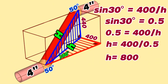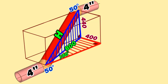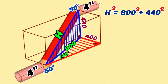800 millimeters is the hypotenuse of the horizontal red color right-angle triangle and is also one of the perpendicular sides of the vertical blue right-angle triangle. Now let's find the big letter H, which is the hypotenuse of the vertical blue right-angle triangle. We will use the Pythagorean theorem formula to calculate this hypotenuse. According to the Pythagorean theorem, H² equals 800² plus 440².